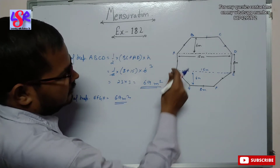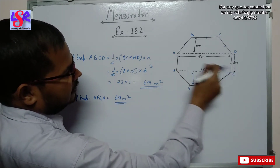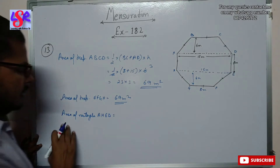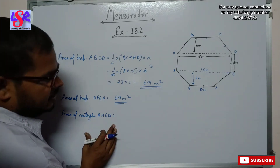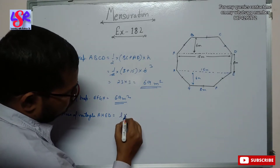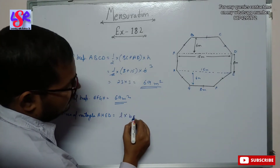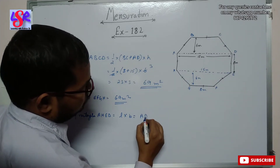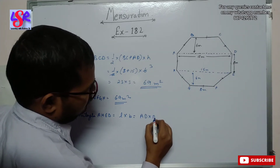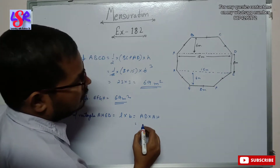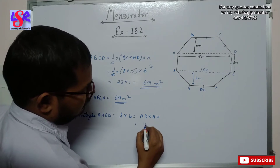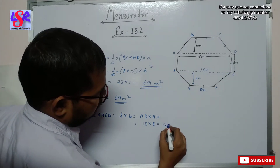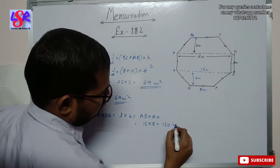Now we are going to find the area of rectangle ADEH. The area of rectangle ADEH equals length into breadth, that is AD into AH, which is 15 into 8, and this equals 120 square meters.